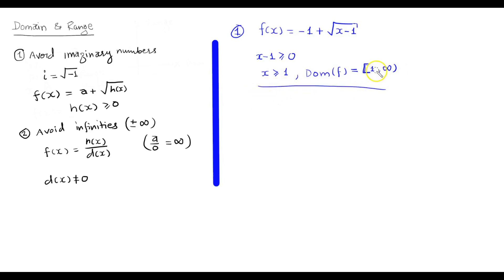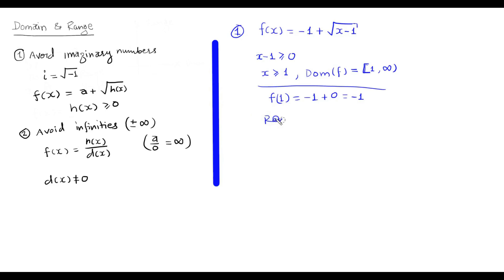Now for the range, we need to choose values from the domain. The smallest value in the domain is 1. Plugging it in: f of 1 equals negative 1 plus the square root of 1 minus 1, which is negative 1 plus 0, so that is negative 1. We cannot find any number lesser than negative 1 by choosing values inside the domain. So the range of f would be negative 1 up to infinity, with negative 1 included: [−1, ∞).